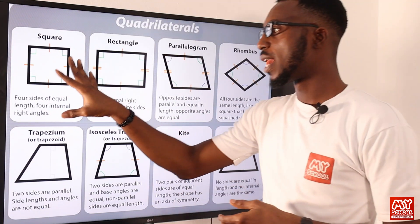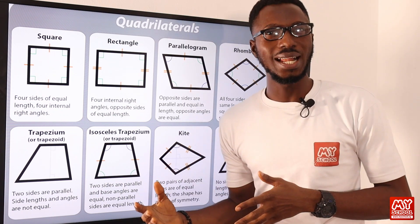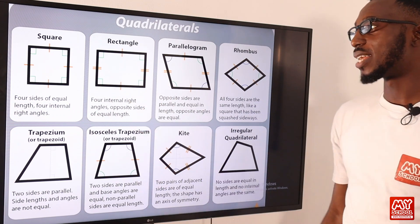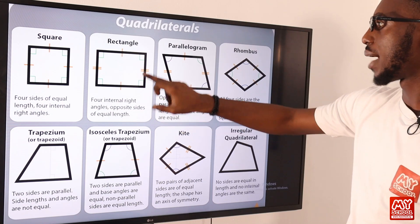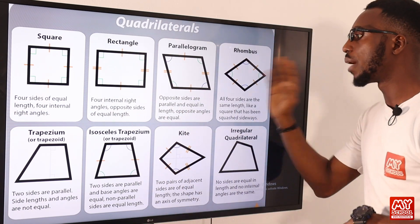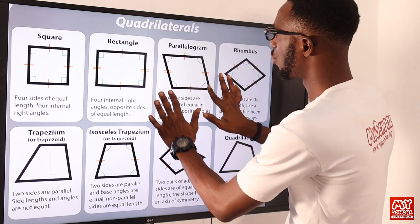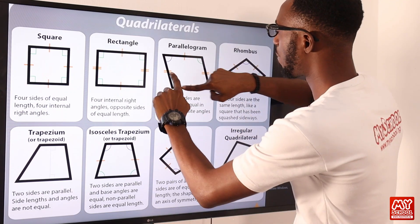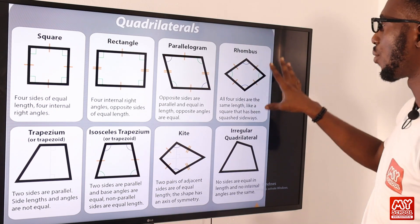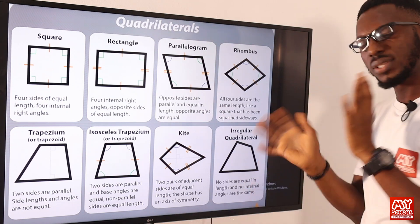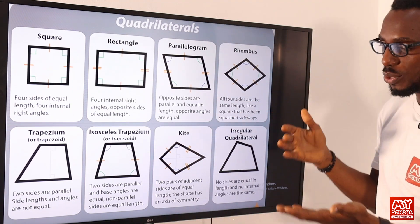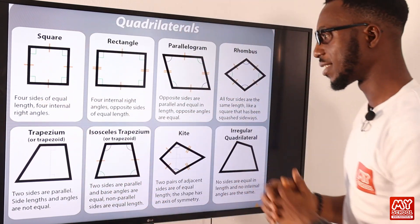A square is a kind of regular quadrilateral — it has equal sides and equal angles: four sides of equal length and four internal right angles, with opposite sides of equal length. A parallelogram has opposite sides parallel and opposite angles equal. A rhombus has all four sides the same length — like a square that has been squashed sideways.